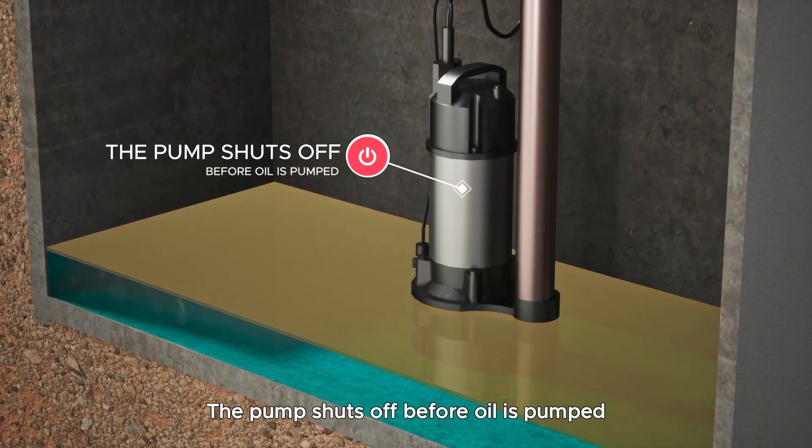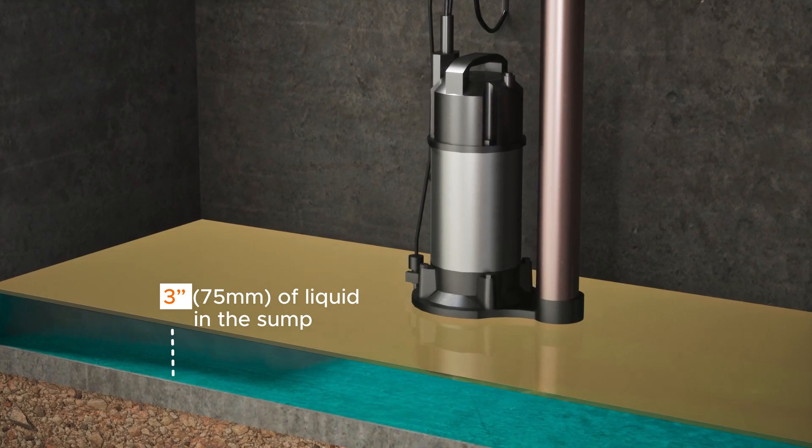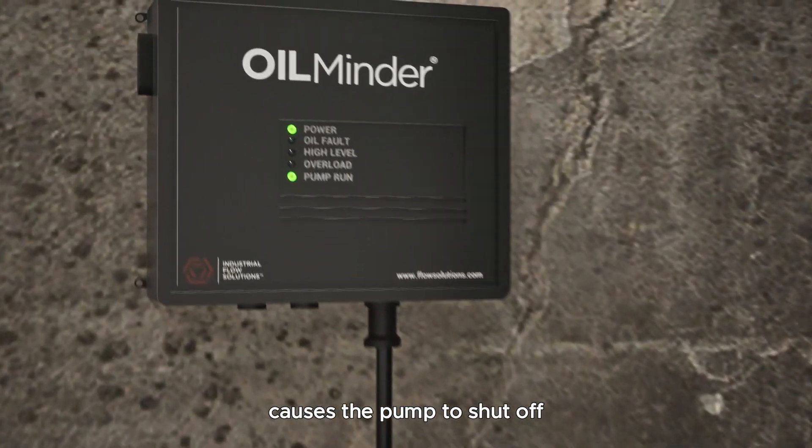The pump shuts off before oil is pumped, leaving about three inches of liquid in the sump. The presence of oil in the sump detected by the probe causes the pump to shut off.